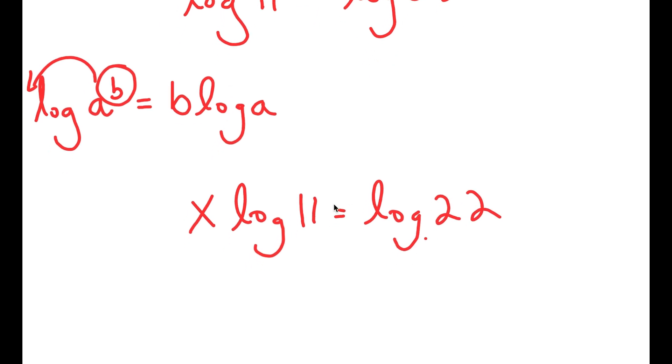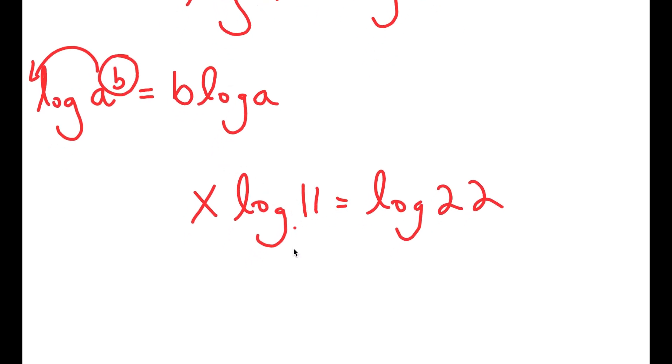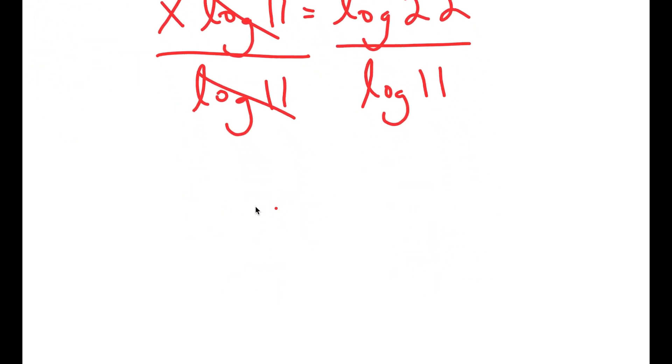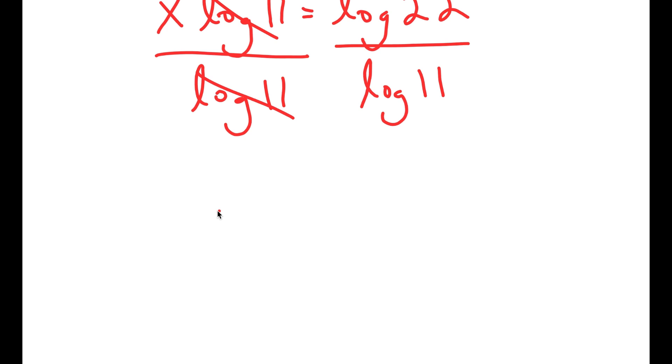So now because it's an actual term, I can isolate it by dividing both sides by log 11. So I get x equals log 22 over log 11.